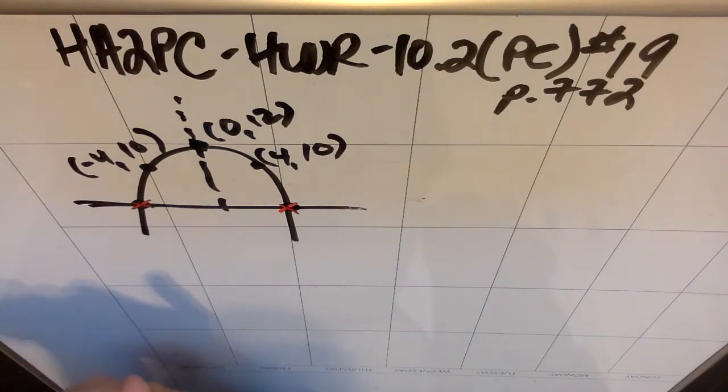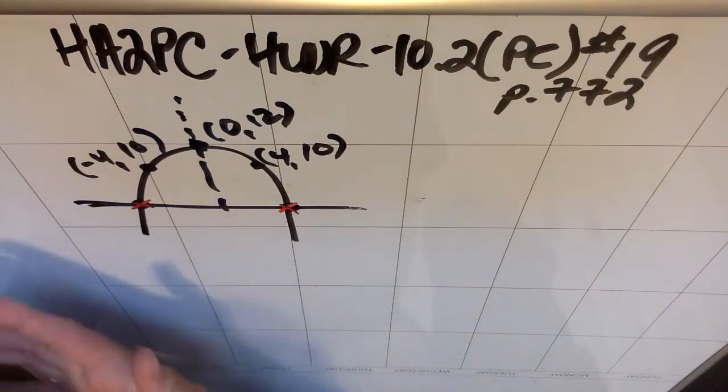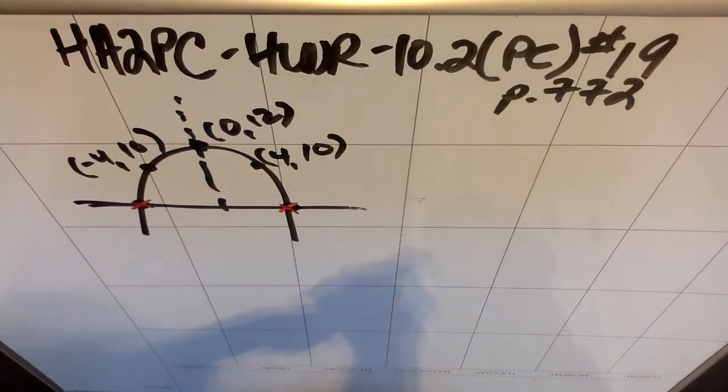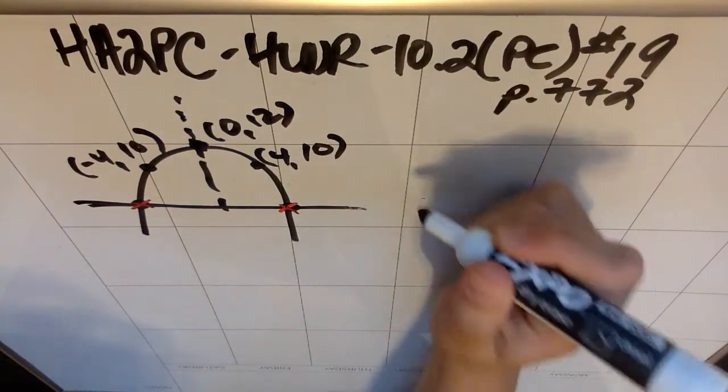then I can find the zeros, because that's really what these are. These are the roots or the zeros. So I know a couple things about this parabola.